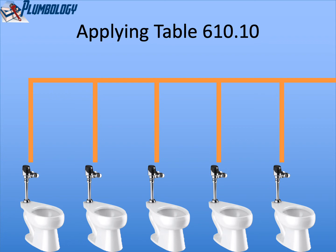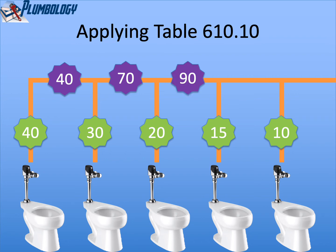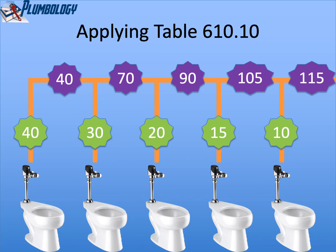Finally, if we have five water closet flush valves, we still use the same decreasing scale starting with 40, then 30, 20, 15, 10. Going back to do the pipe segments: 40 plus 30 gives us 70, plus 20 gives 90, plus 15 puts us at 105, plus the last one which is 10 gives us 115. So that water pipe branch would be sized for 115 water supply fixture units.